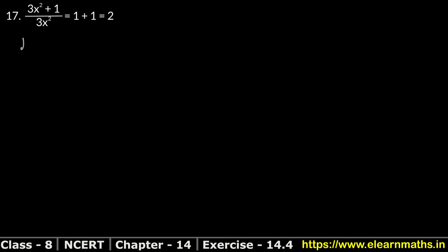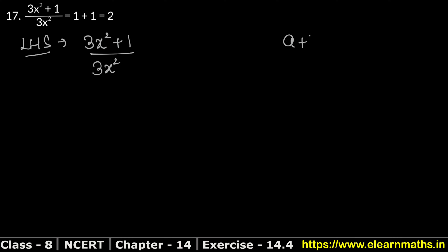We take our left hand side: 3x squared plus 1 upon 3x squared. Look, if you can see here, this value is in the form of a plus b upon a, and we can solve it.